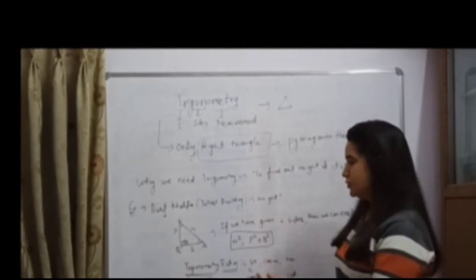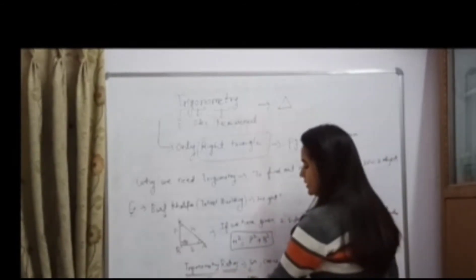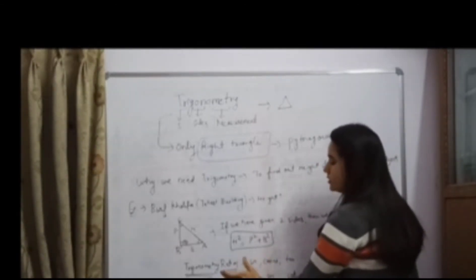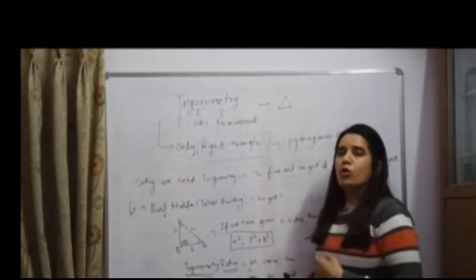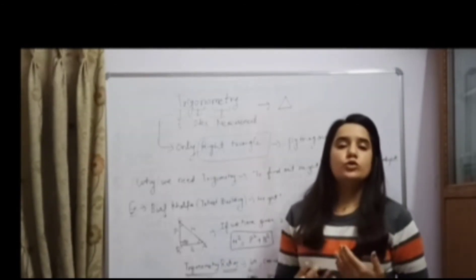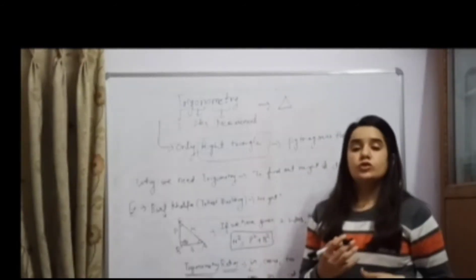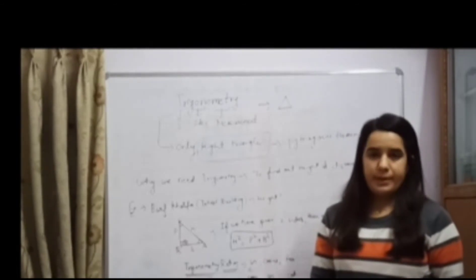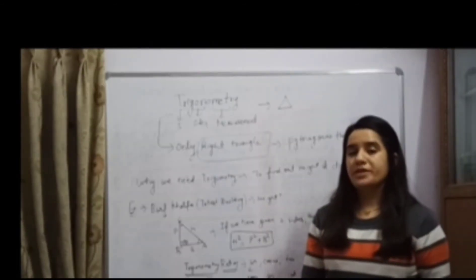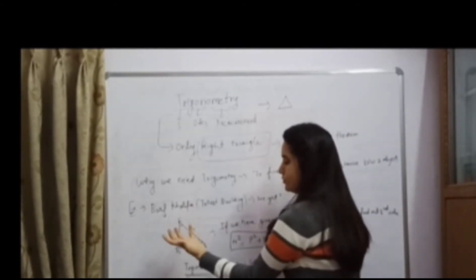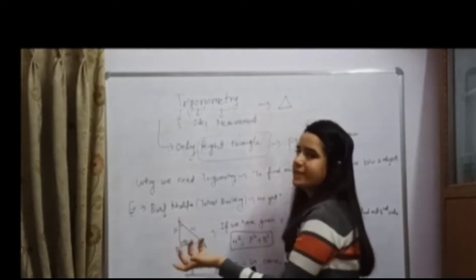Here we introduce trigonometry ratios. What are trigonometry ratios? Trigonometry ratios are sine, cosine, tan, cosecant, secant, and cotangent — that is the standard name of the trigonometry ratios. We also have standard values of trigonometry ratios for particular angles. So if you understand what a trigonometry ratio is, you will easily understand that if you are given one side and one angle of a right triangle, then you can find the other sides as well.